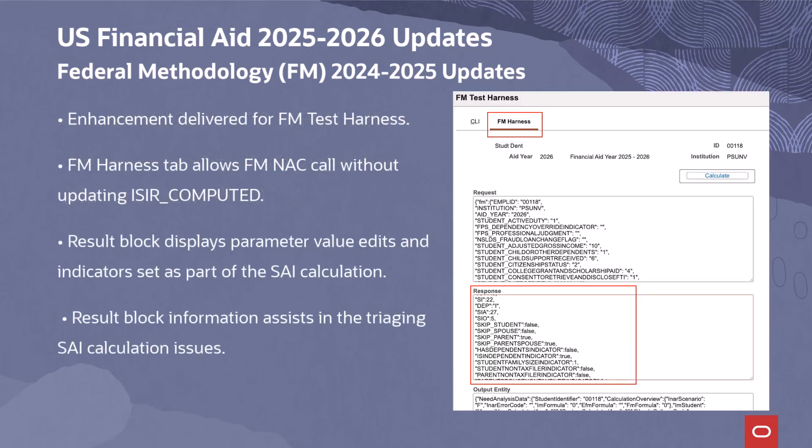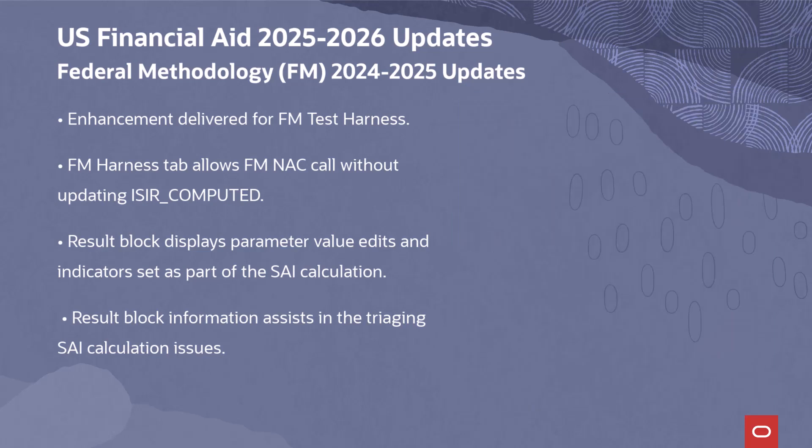An enhancement has been delivered for the FM test harness. Users will now see the FM harness tab on the component, which allows for a standalone FM NAC call without updating ISA computed with the returned results. The result block has been updated to display parameter value edits and indicators as part of the SAI calculation. The expanded result block information can be used to assist in the triage of SAI calculation issues.